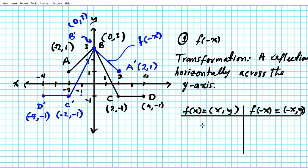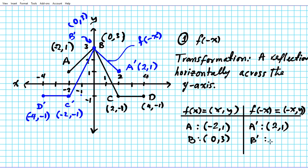Starting with point A: A is negative two, one. Using this rule, A prime would just be the opposite of negative two, which is positive two, comma one. Point B is zero, comma three. If we invert the sign of the x coordinate, the opposite of zero is still zero, so B prime is zero, comma three. Point C is two, comma negative one, so C prime will be negative two, comma negative one.